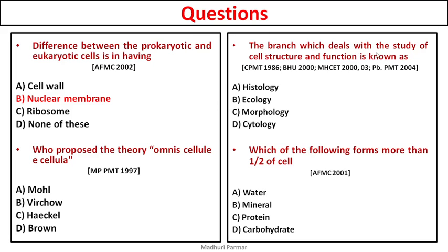The next question: the branch which deals with the study of cell structure and its function is known as? Options are histology, ecology, morphology, or cytology. Histology is the study of tissues. Ecology is the study of different populations and ecosystems. Morphology is the study of structures — how a cell or organ looks. Wherever you hear the term 'cyto', it means cell, so cytology means study of cell. The answer is cytology.